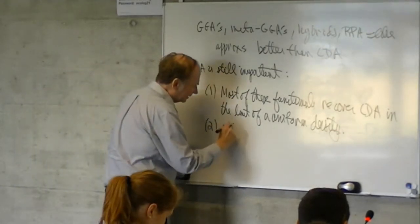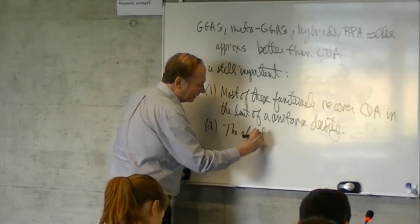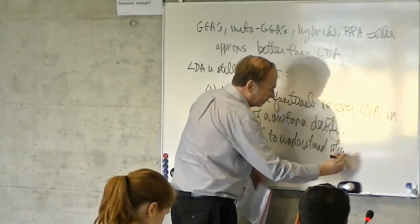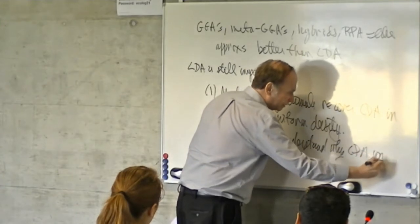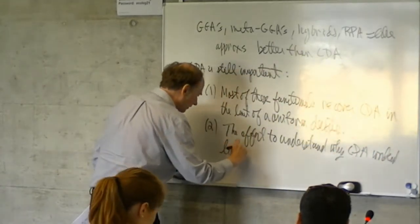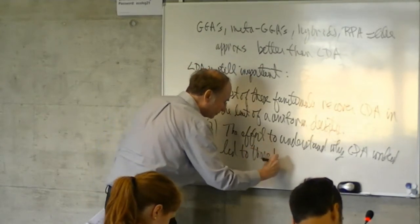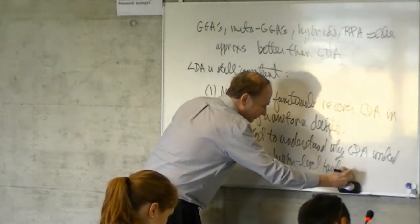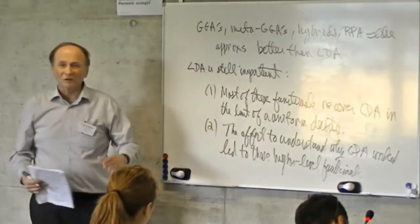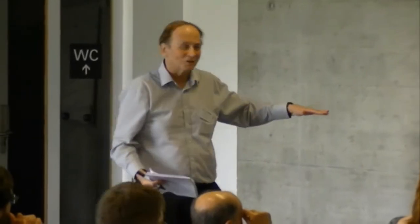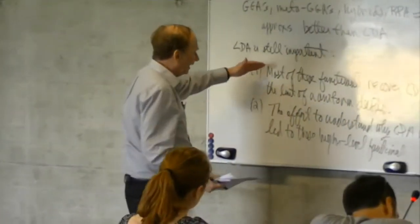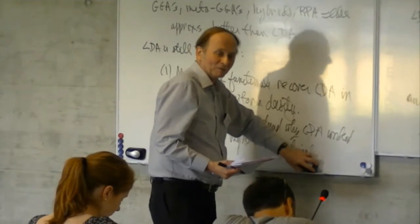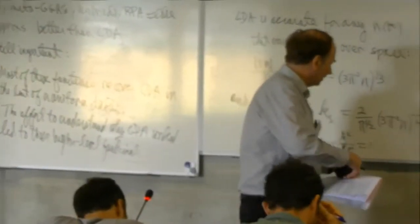It's not obvious that a functional that's only exact for the uniform electron gas is going to be good for real atoms and solids — but it is. You can make other functionals that recover that limit even better, and there's something there that needed to be understood.